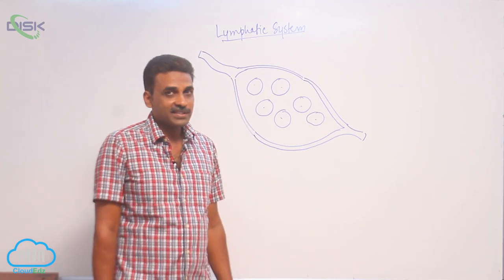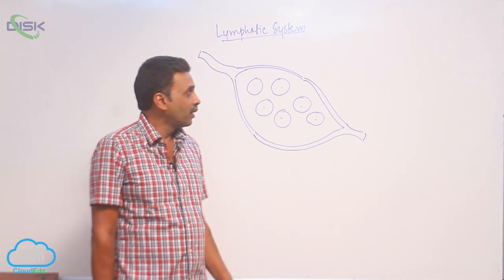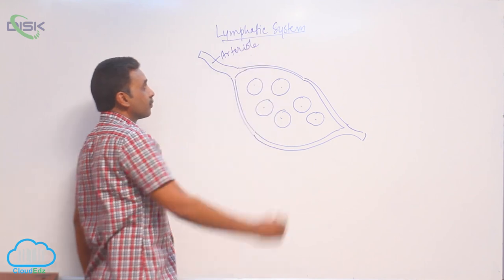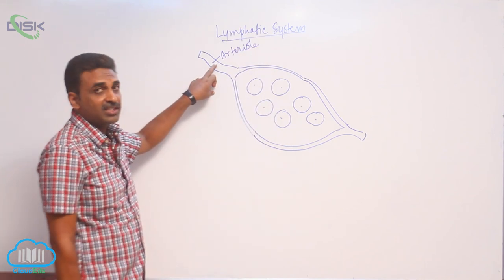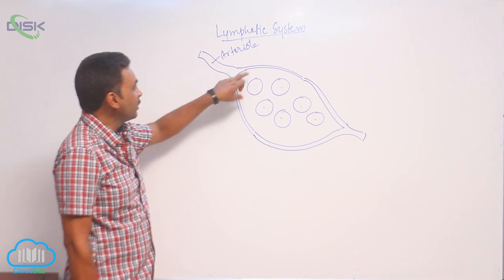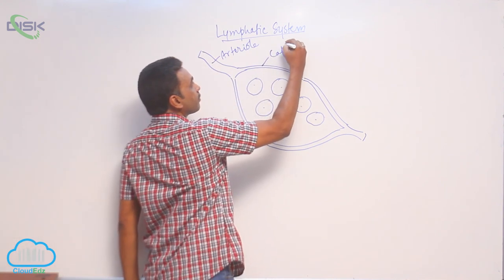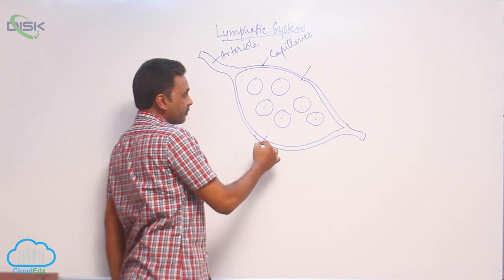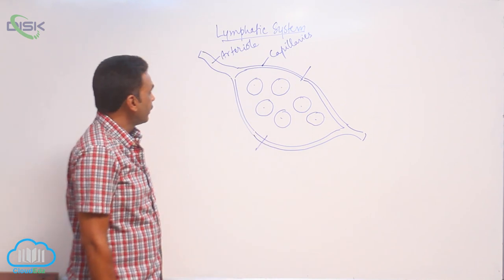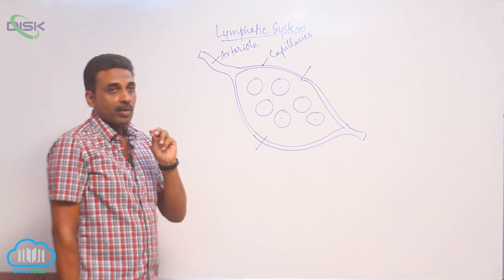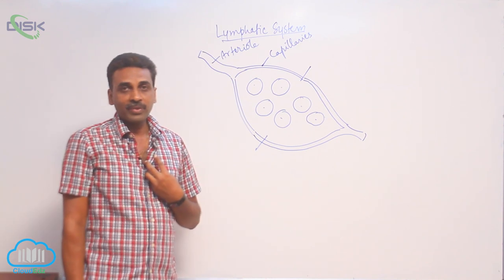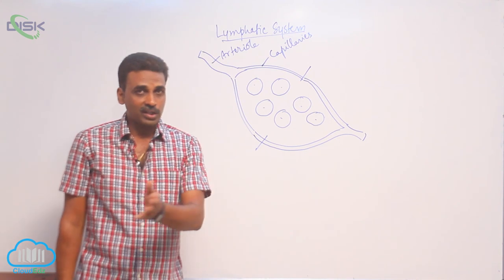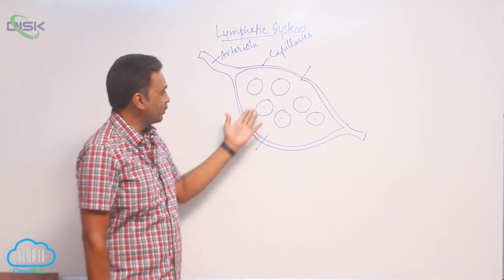Let us discuss about the lymphatic system today. This is an arteriole. Arteriole is a branch of artery. The arterioles divide into capillaries. The oxygenated blood coming from the systemic arch enters into the dorsal aorta, arteries, arterioles, and finally they come into the capillaries.